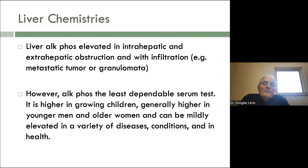Liver alkaline phosphatase is elevated in intrahepatic and extrahepatic obstruction and with infiltration such as tumor or granuloma. However, the alkaline phosphatase is the least dependable serum test — it's higher in growing children, generally higher in younger men and older women, and can be mildly elevated in a variety of disease conditions and in health.